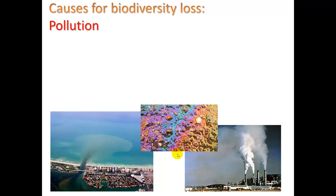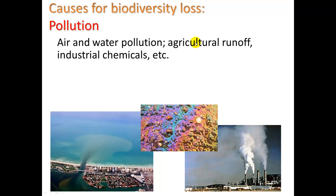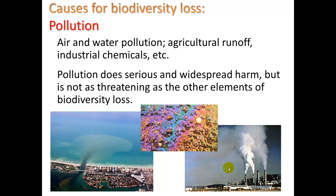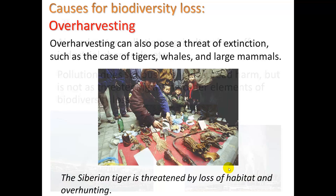Third cause: pollution — air and water pollution, and agricultural runoff. We talked about the eutrophication of waters due to excessive nitrates and phosphates, which can create biodiversity loss as we see in coastal dead zones. Industrial chemicals also have a disastrous effect on amphibians, which have very permeable skin to dissolved substances, so pollutants can pass through their skin easily. Air pollution can affect bird populations — the pesticide DDT was greatly affecting bird populations, especially the condor. Pollution does serious and widespread harm, but it is not as threatening as habitat destruction, invasive species, and climate change.